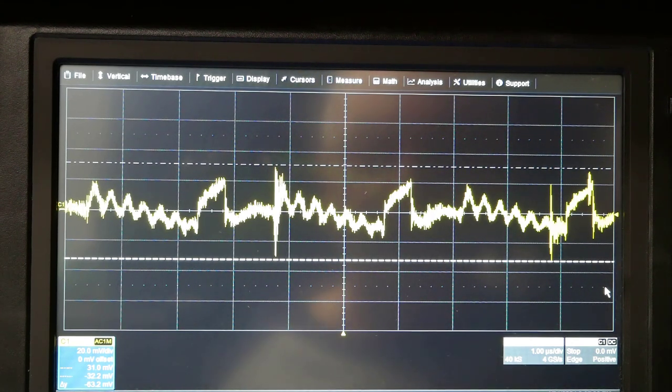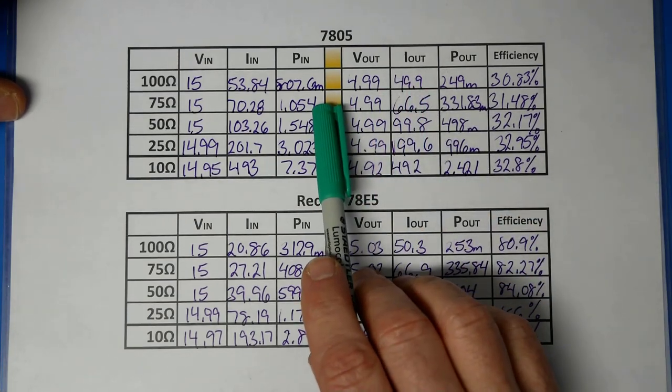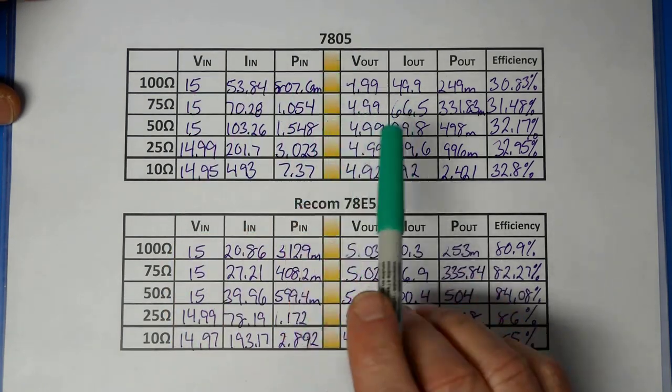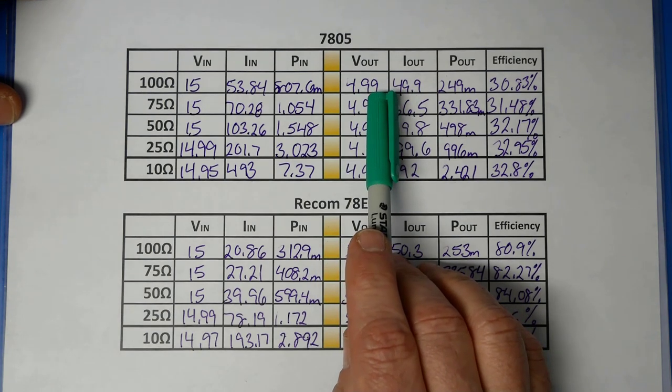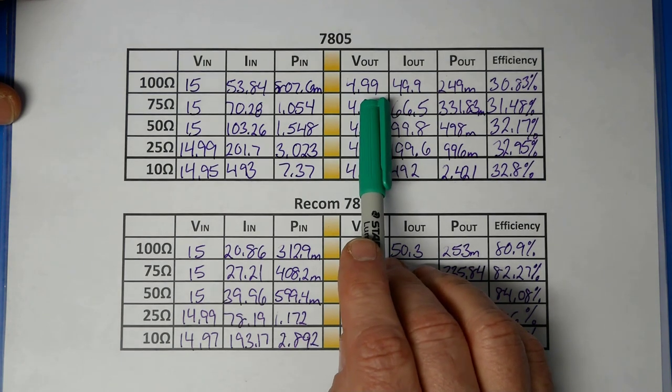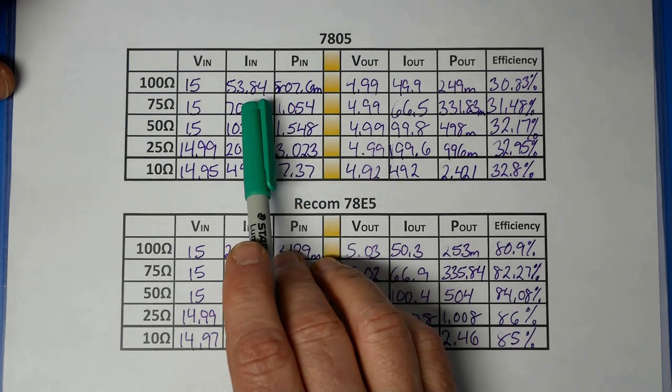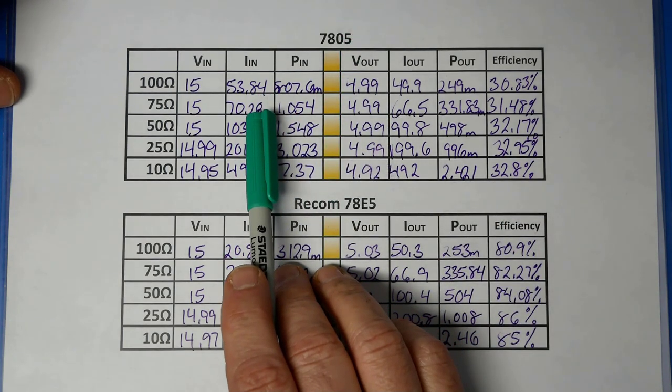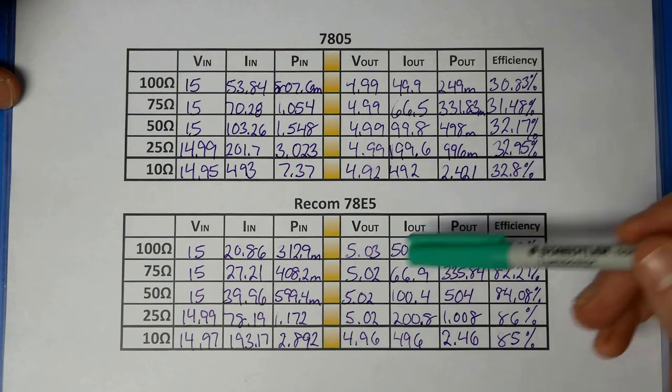Let's take a look at the results from our testing of the two circuits. Well here are the results for our test. And it wasn't a particularly fair test at this point. Because we have 15 volts in on a linear regulator and only 5 volts out. And any voltage above V out is essentially wasted internally. The currents between in and out should be roughly the same. With the input current of course being a little bit higher. There's always going to be the quiescent current. And that's about 3, 4 or 4 milliamps on a 7805. The best efficiency we got was at 25 ohms. And it was only 32.95%.